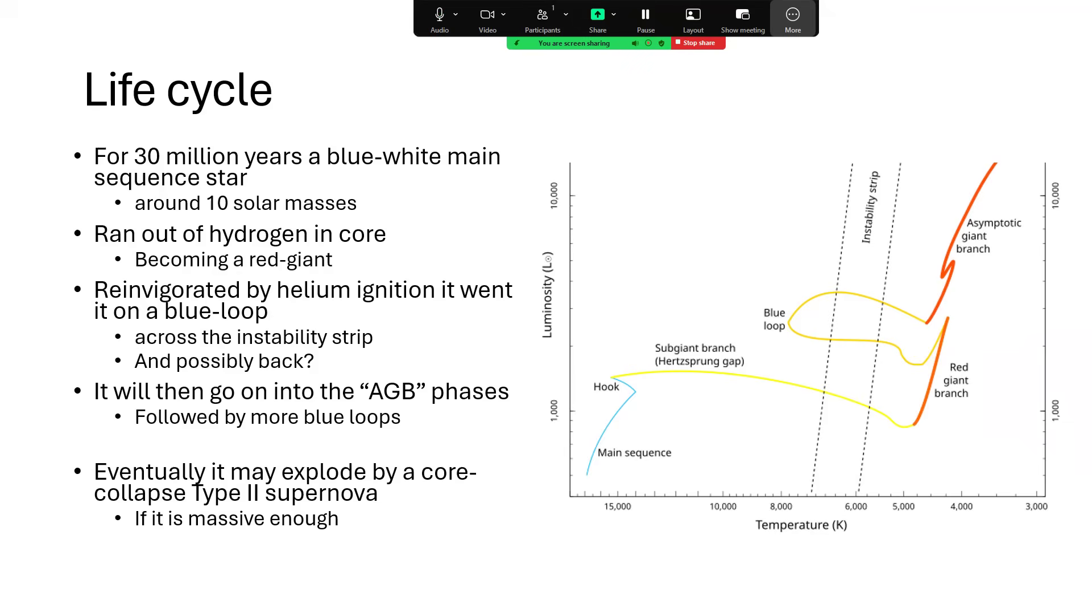And after that, it will cross back across the instability strip, because gradually the carbon oxygen will build up in the core, and that will be inert to begin with, and it will lose efficiency, and again fades from being a furious blue-white color on the surface.